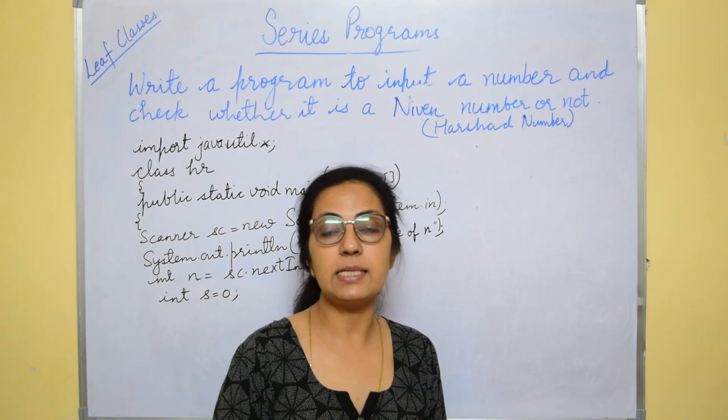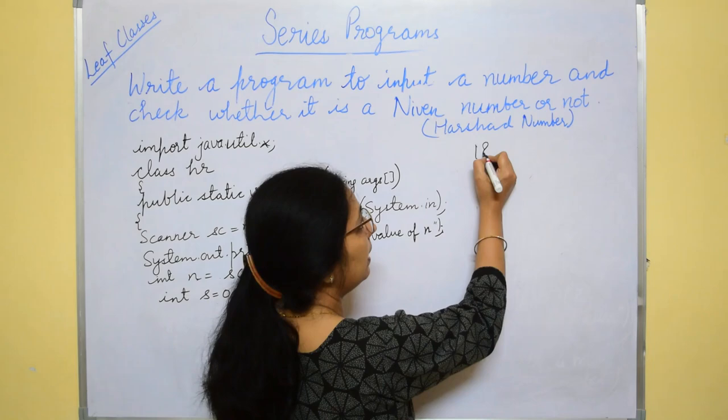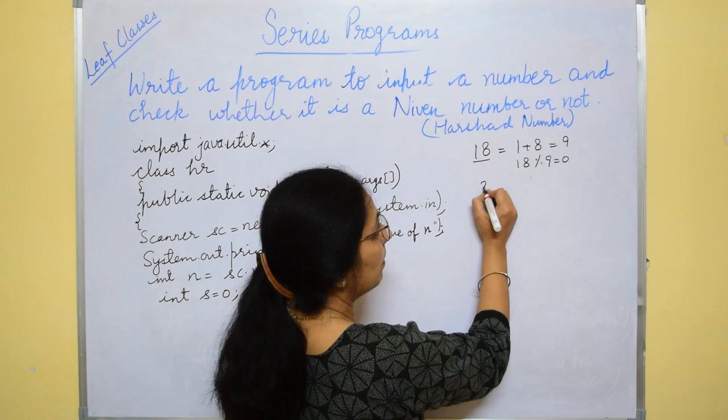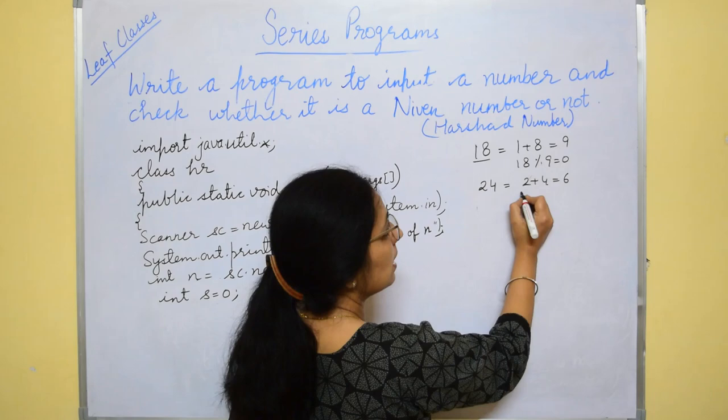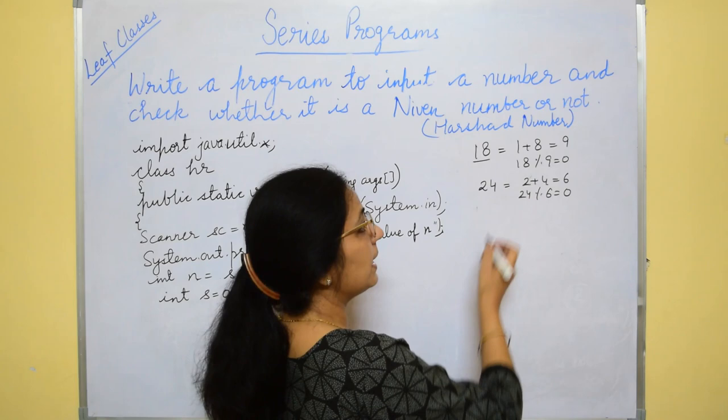It says, if the number is divisible by sum of its digits, then that number is said to be Niven number. Let's take the example 18, the sum of the digits are 1 plus 8, that is equals to 9. 18 mod 9 equals to 0, so 18 is Niven number. 24, 2 plus 4 is 6, 24 mod 6 equals to 0, so 18, 24, these are the Niven numbers.